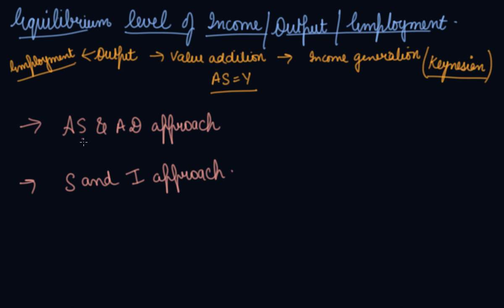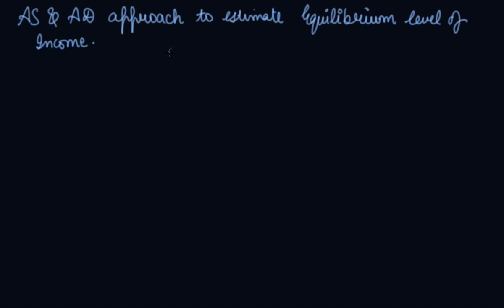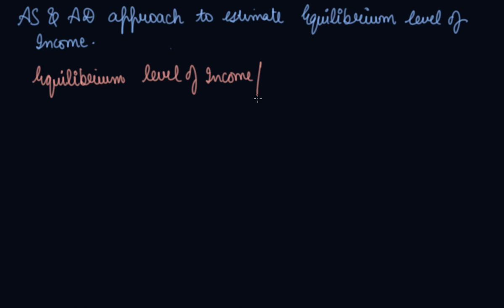In this video we will be doing the aggregate supply and aggregate demand approach first, in order to calculate the equilibrium level of income, output, or employment. The equilibrium level of income or output is achieved when your aggregate supply is equal to aggregate demand.